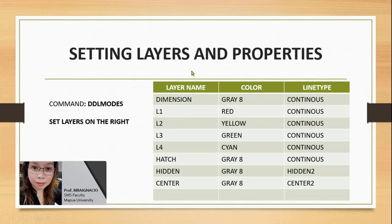The command is DDL Modes. Set up the layers based on the instructions in the pre-recorded demo available in your Week 4 folder. The layer list is as follows: layer name 'Dimension' — color gray number 8, line type Continuous; 'L1' — color red, line type Continuous; 'L3' — color green, line type Continuous; 'L4' — color cyan, line type Continuous; 'Hatch' — gray number 8; 'Hidden' — gray number 8; and 'Center' — gray number 8, line type Center 2.